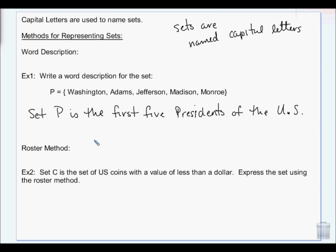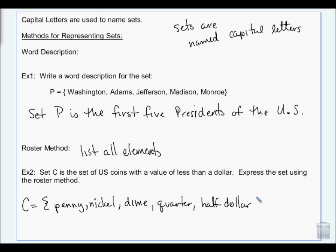In words, that set that I wrote on the last page was set, if I had named it A. Set A is the even numbers up to 10. If we want to use the roster method, roster method just means listing all the elements. So set C is the set of U.S. coins with a value of less than a dollar. So I have a penny, nickel, dime, quarter, half dollar.